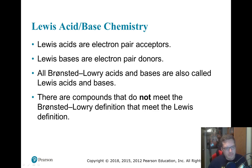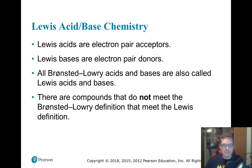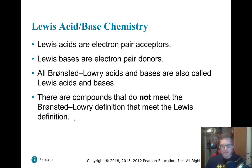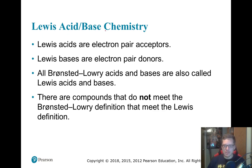Alright, here we go. This is for Chem 2 Unit 11. We're going to talk about Lewis acids and bases. This is the third definition for acids and bases we've talked about. The interesting thing is the Brønsted-Lowry acid and base definition was developed the same year as Gilbert Lewis came up with his definition for acids and bases — 1923, the year of the acids.